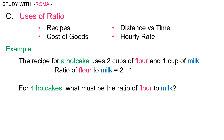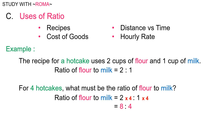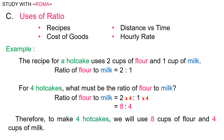For four hot cakes, what must be the ratio of flour to milk? The ratio of flour to milk will be two times four is to one times four, which is equal to eight is to four. Therefore, to make four hot cakes, we will use eight cups of flour and four cups of milk.